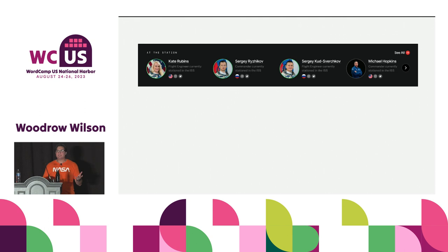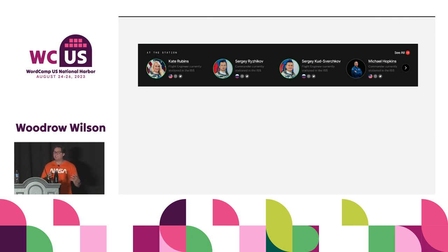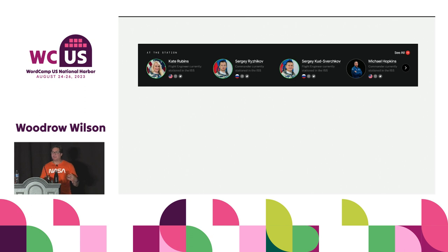Once users started trying to adapt existing content and create new content with the blocks they had — not the blocks they were waiting for — and once dev started feeling freer to branch out from the design system and really listen to what the user community was asking for, we started to see the site and content truly come together. There was a refocus: it wasn't necessarily about the quantity of Gutenberg blocks we were delivering, but mostly the quality — making sure those things really helped people tell the stories NASA desires and needs.